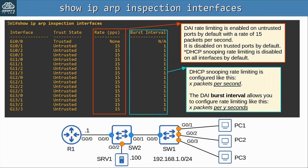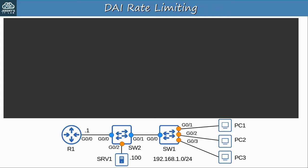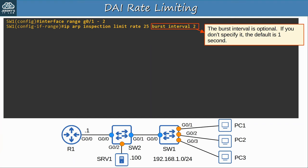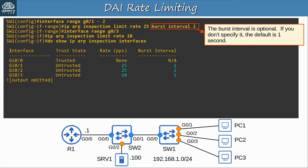Let's configure DAI rate-limiting on SW1. On G0/1 and G0/2, I used ip arp inspection limit rate 25 burst interval 2 — that means 25 packets per 2 seconds, changing the rate from the default of 15 packets per second to 25 packets per 2 seconds. The burst interval is optional; if you don't specify it, the default is 1 second. On G0/3, I configured ip arp inspection limit rate 10 without specifying a burst interval. For G0/1 and G0/2 it shows 25 packets per 2 seconds, and for G0/3 it shows 10 packets per second.